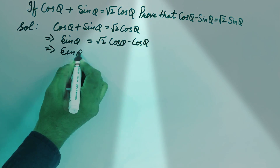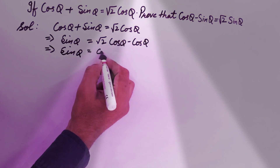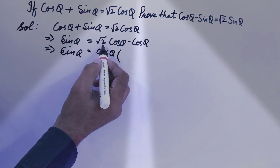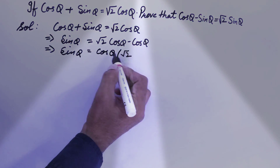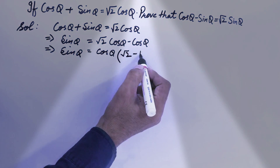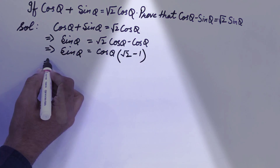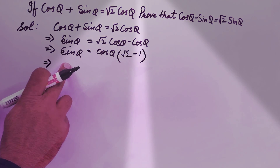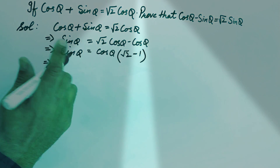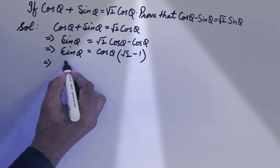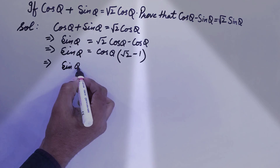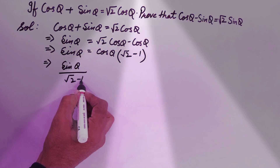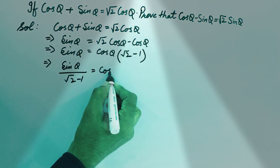On the right-hand side, we take cos θ as common, leaving us with (√2 - 1). We bring (√2 - 1) to the left-hand side, placing it in the denominator, giving us sin θ / (√2 - 1) = cos θ.